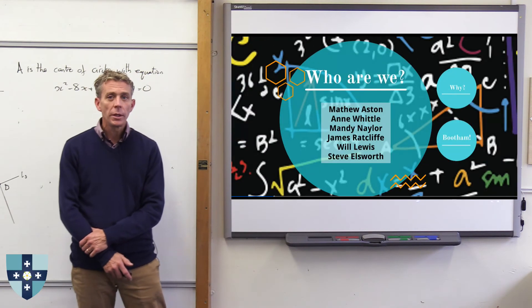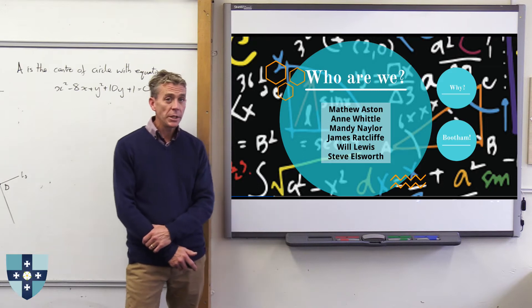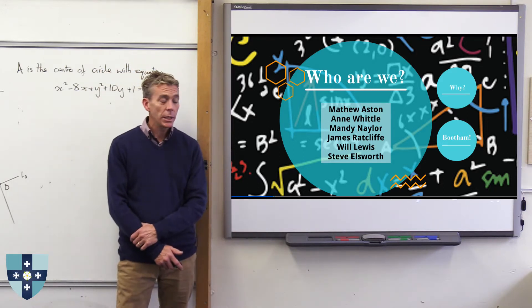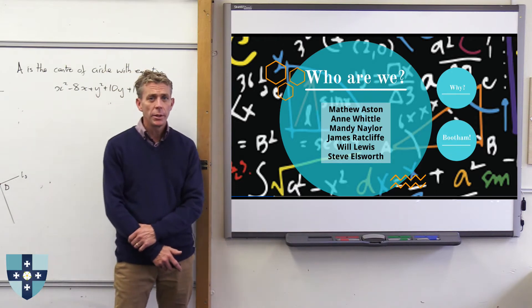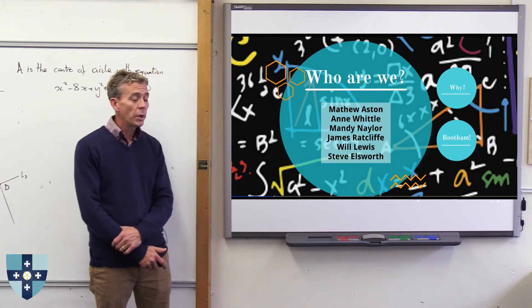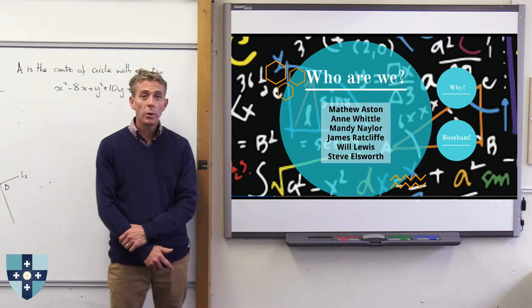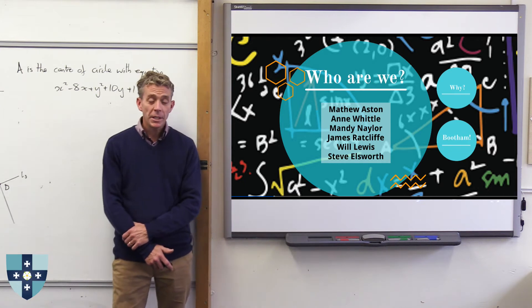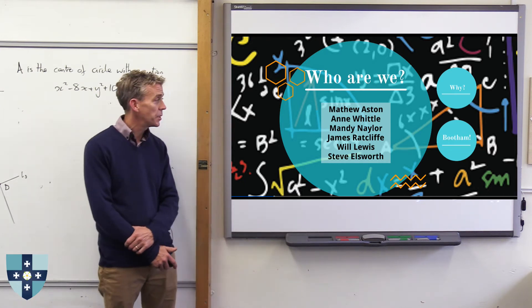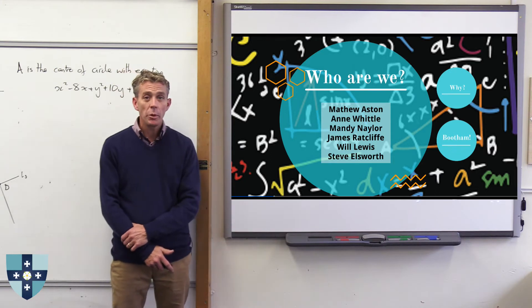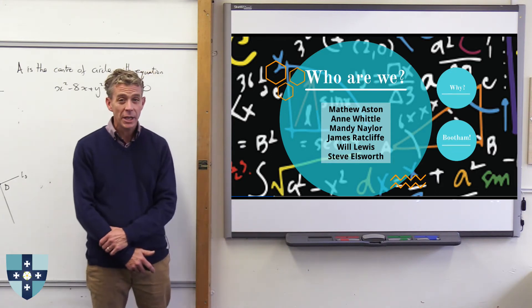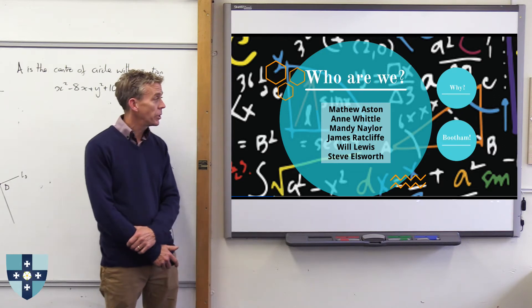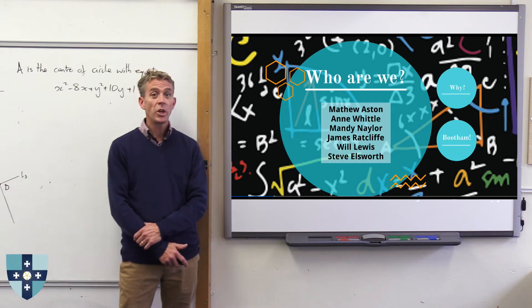So who are we? The maths department at Bootham School for the A-level teaching is made up of myself, Matthew Aston. There's also Anne Whittle, Mandy Naylor, James Ratcliffe, Will Lewis and Steve Ellsworth. Now from my point of view this is actually a really important part of what I've got to say. These guys who will be teaching you, they are fantastic maths teachers. All schools obviously have good maths teachers in them, but these guys are all capable and very effective at teaching both A-level maths and A-level further maths. So we've got a wealth of experience here of very strong mathematicians who are also quite human.